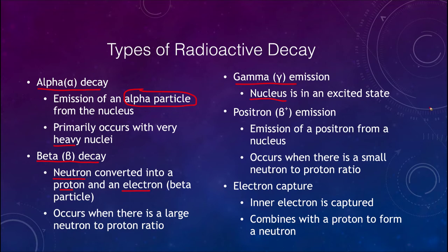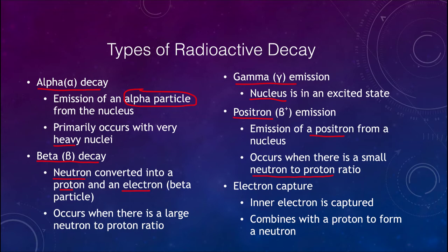Gamma emission occurs when the nucleus is in an excited state and gives off energy — similar to how electrons emit energy, but here it's the entire nucleus. We can also get positron emission: a positron is a piece of antimatter, an anti-electron, and it is emitted from the nucleus when the neutron-to-proton ratio is small. In that case, a proton is converted and gives off a positron, leaving behind a neutron.